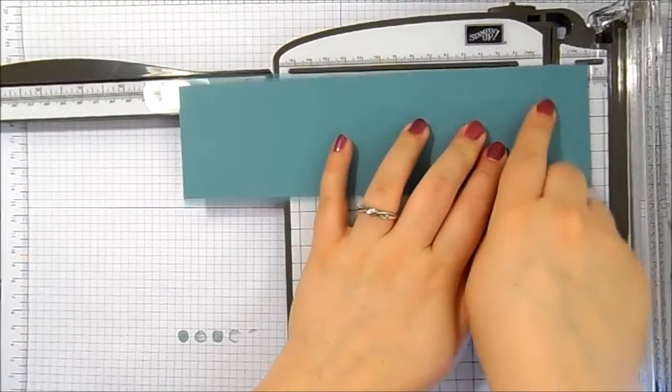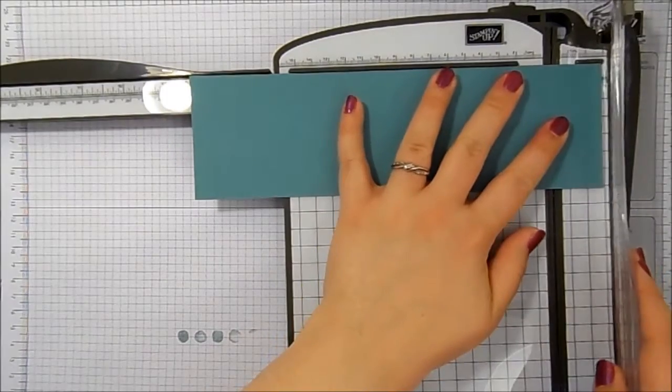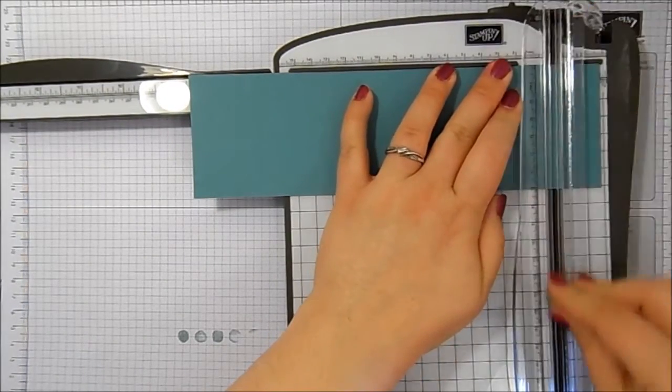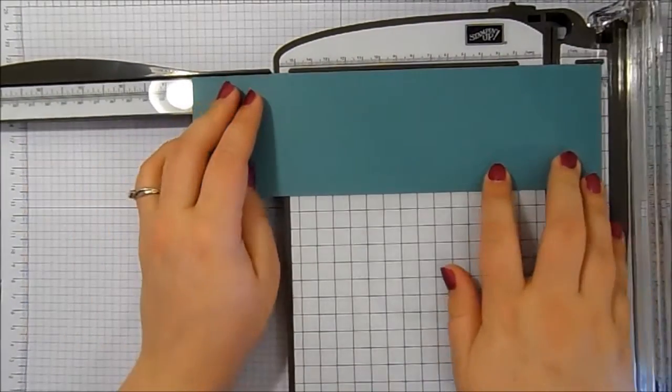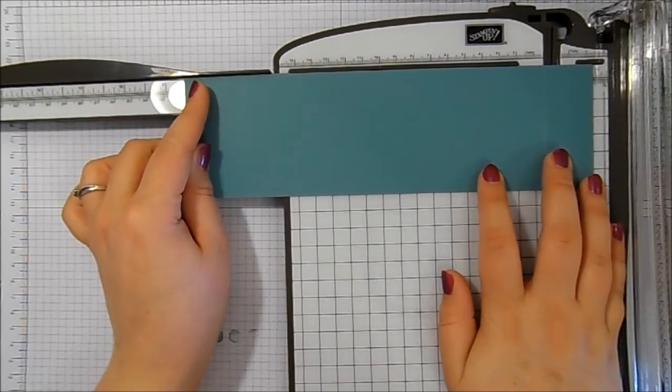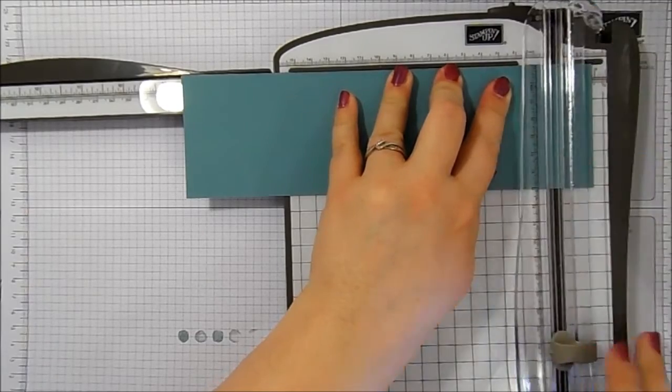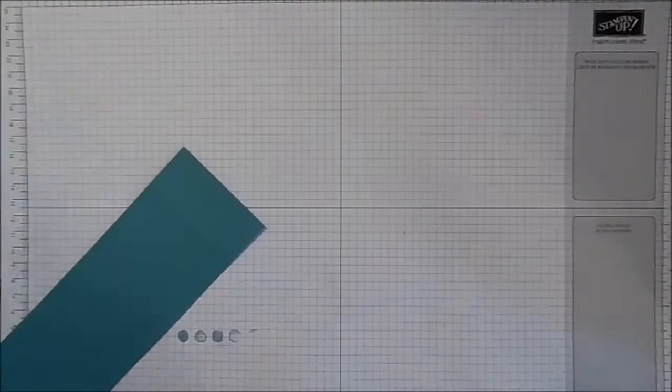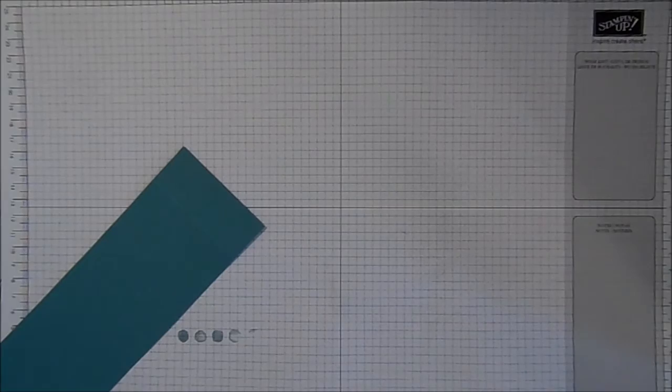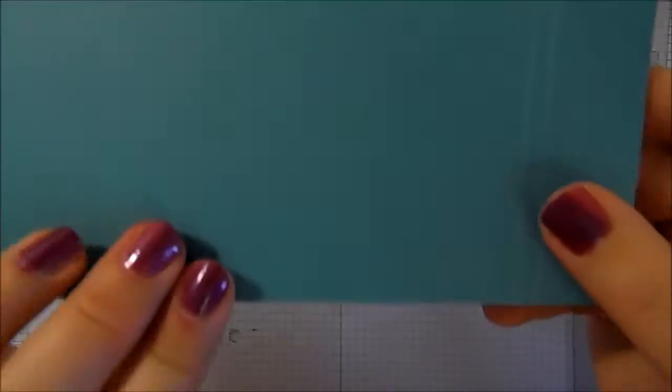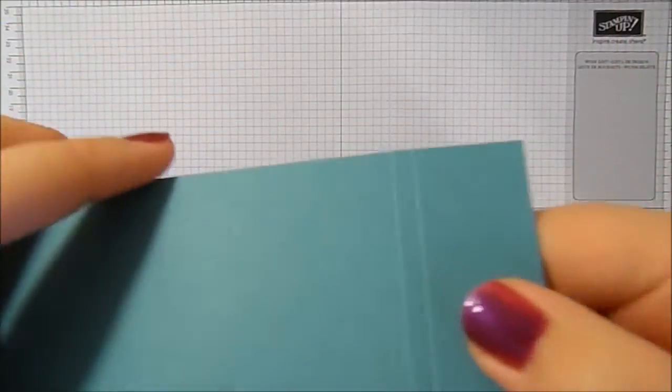So I'm going to score at eight and three eighths and at eight and nine sixteenths. There we go. Which gives us two score lines quite close together.